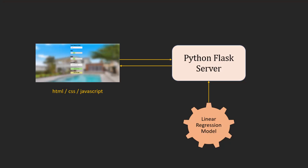Once the model is built, we will export it to a pickle file and then we will write a Python Flask server which can consume this pickle file and do price prediction for you. This Python Flask server will expose HTTP endpoints for various requests, and the UI written in HTML, CSS and JavaScript will make HTTP GET and POST calls.